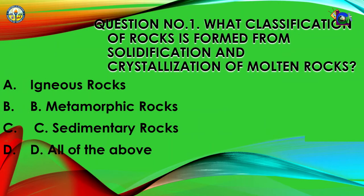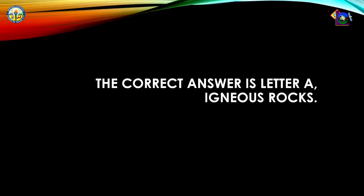Number 1: What classification of rocks is formed from solidification and crystallization of molten rocks? A. Igneous rocks, B. Metamorphic rocks, C. Sedimentary rocks, D. All of the above. The correct answer is letter A — Igneous rocks.